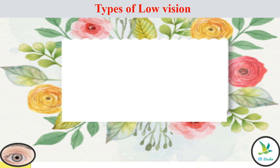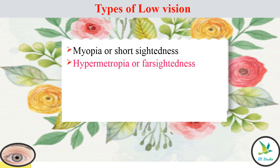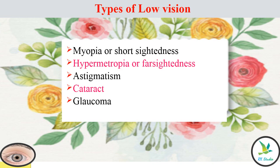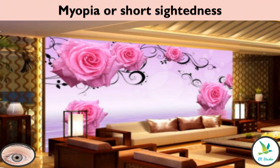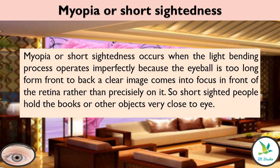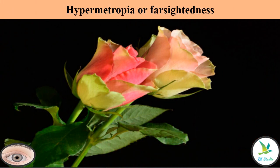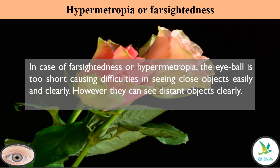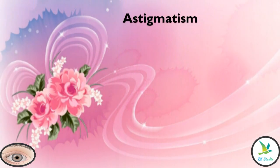Types of low vision include: myopia or short-sightedness, hypermetropia or far-sightedness, astigmatism, cataract, glaucoma, and squint. Myopia or short-sightedness. Hypermetropia or far-sightedness. Astigmatism.